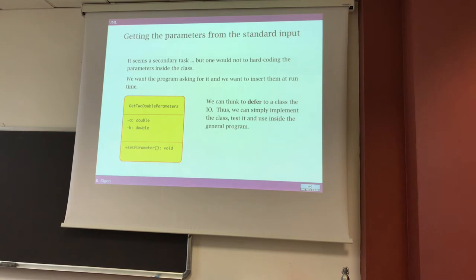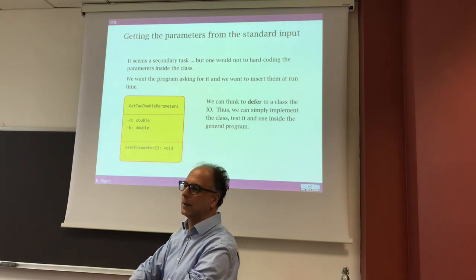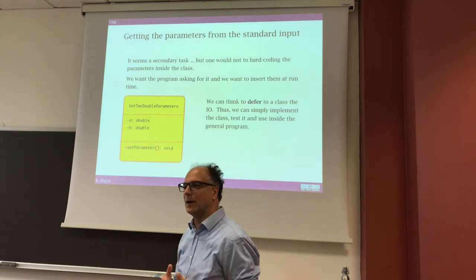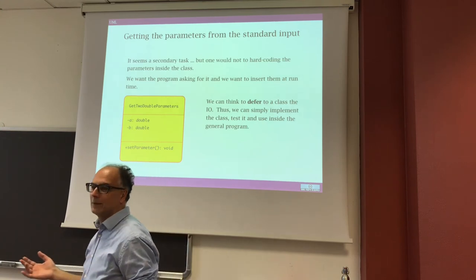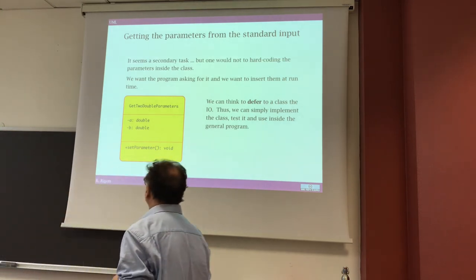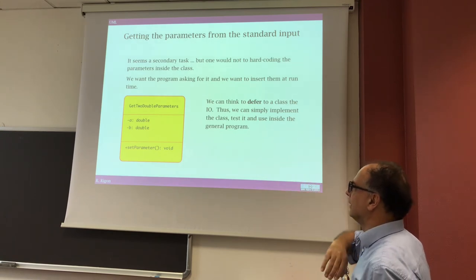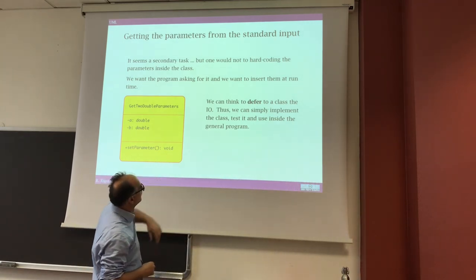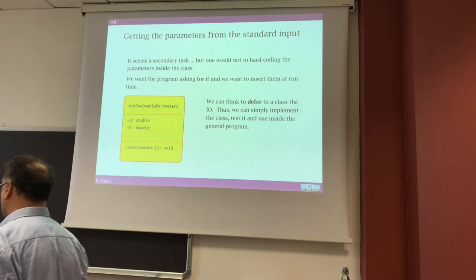It is a class where we have two parameters, and the parameters are coded in our class. In an equation, a equals 3, b equals some value. We want to parameterize the class, because we don't want to write a different program every time we want to change a and b. We want to have just a program that works for any a and b. So we build another class, and this class has two parameters, a and b, and a method. Each class has a task; this class may have the task to read the parameters.